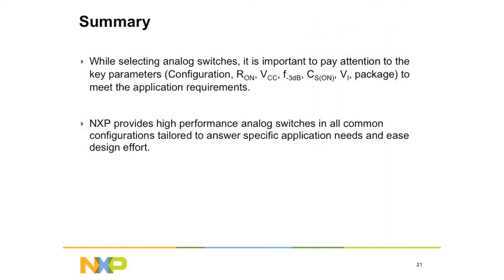So in summary, take a look at the needs of your application. All switches are similar, but each has been tuned for a very specific application. Understand the resistance, the capacitance, the voltage, and the features that you need, and it makes it easy to select the right analog switch. Switches are everywhere — remember the characteristics, and they will help you pick the right analog switch for your application. For more information, go to our website at www.nxp.com.